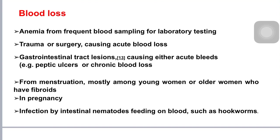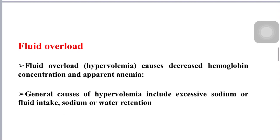Blood loss from menstrual stress is mostly seen among young women or older women who have fibroids. In pregnancy it also happens. Anemia can also result from infection by intestinal nematodes feeding on blood, such as hookworms.